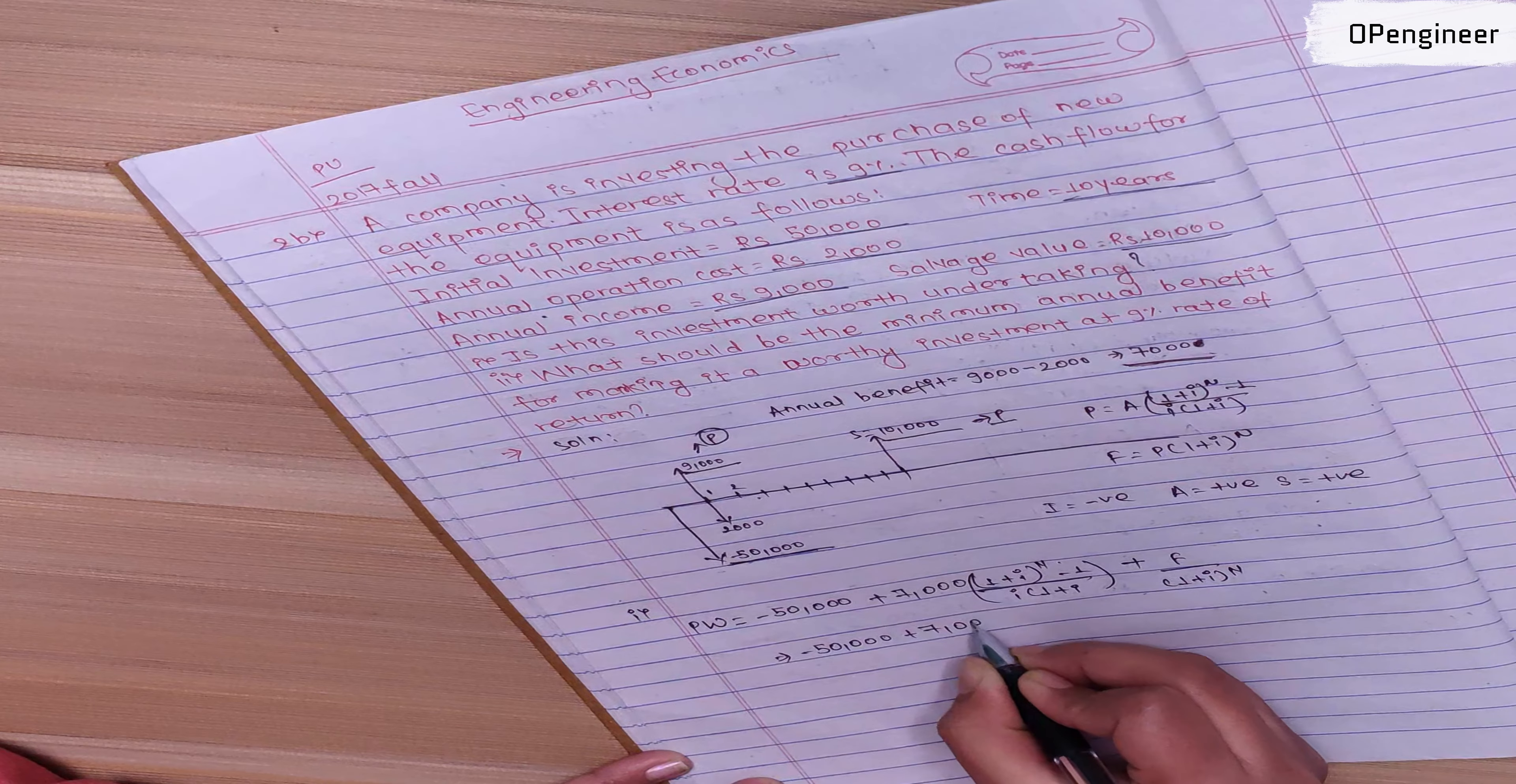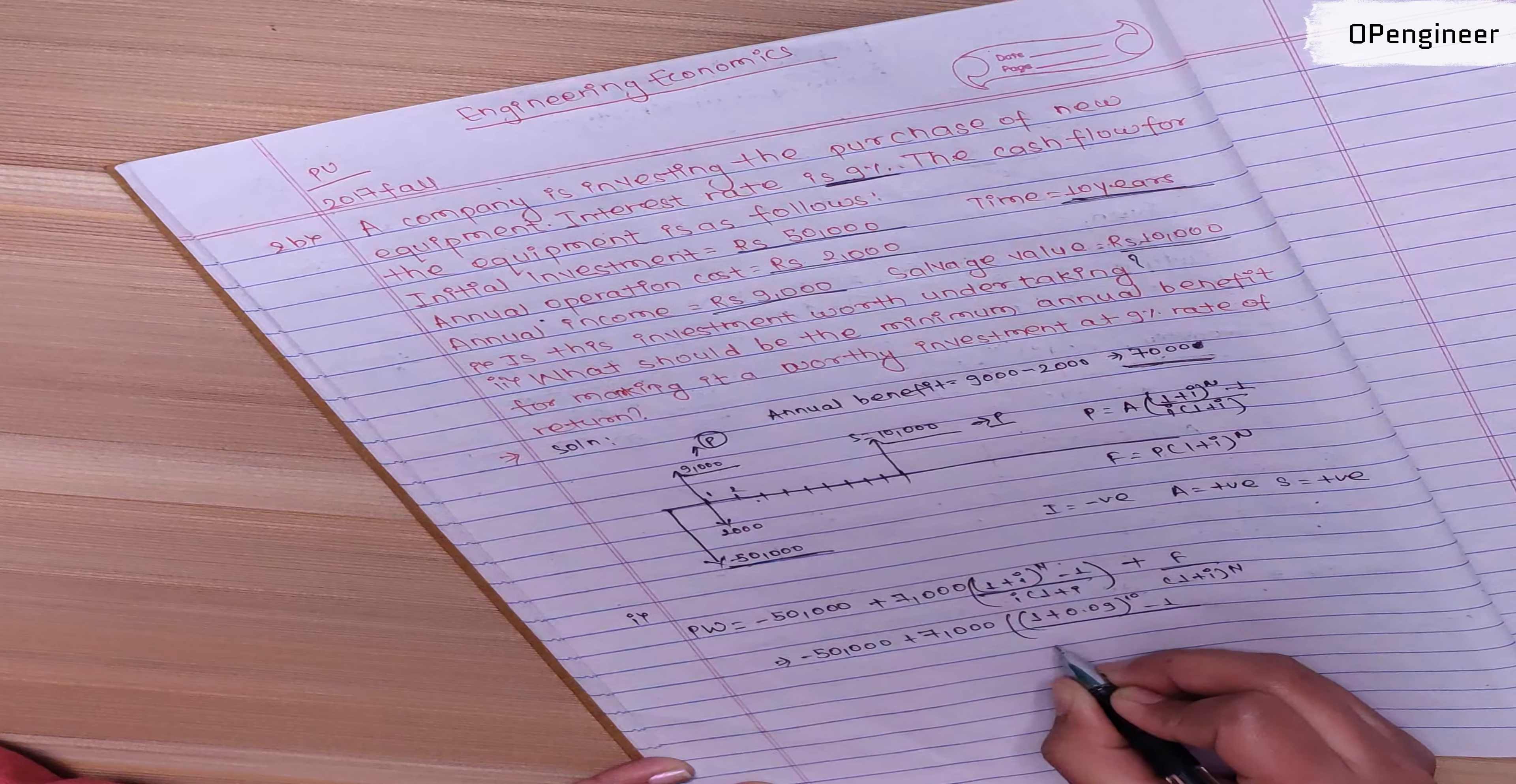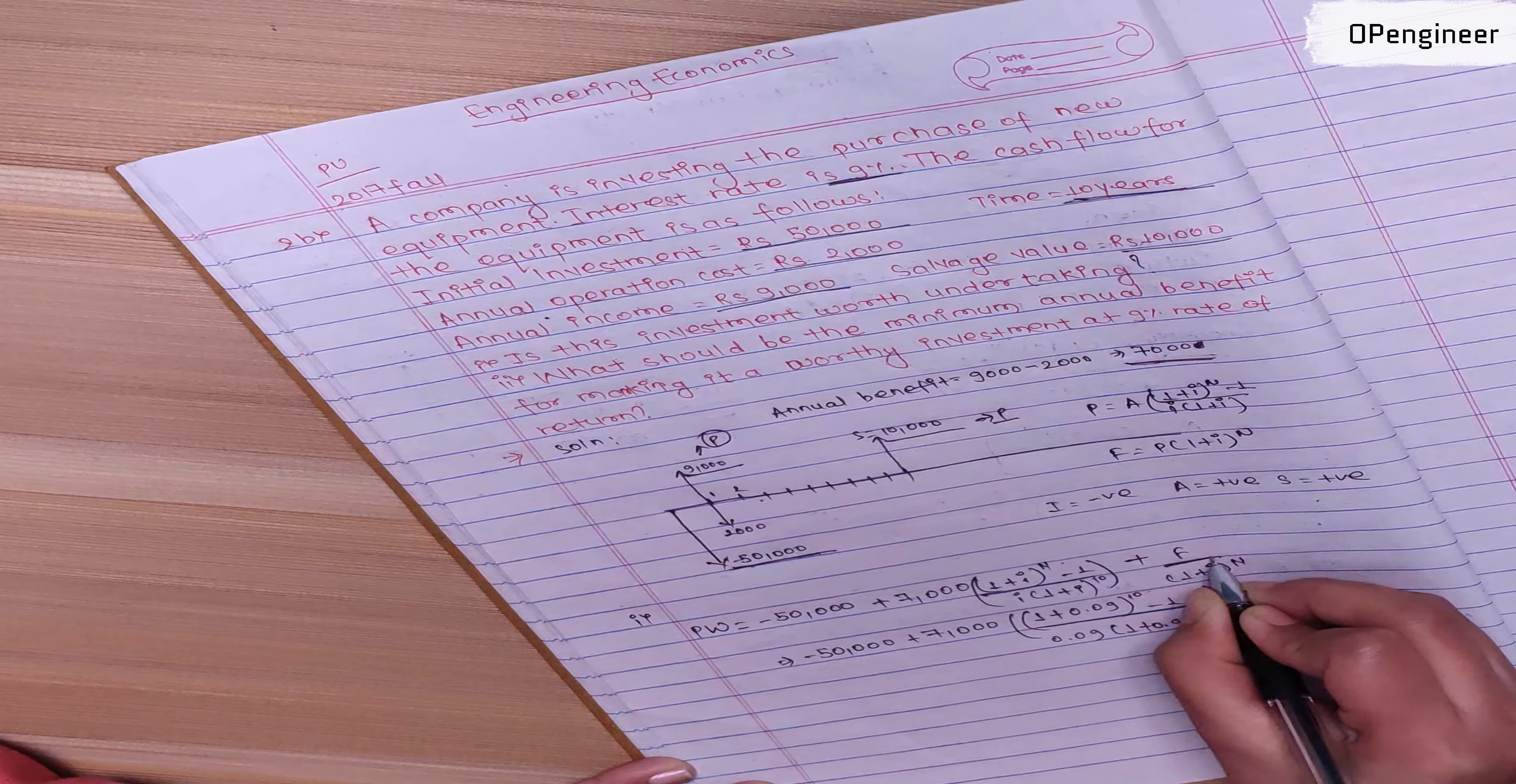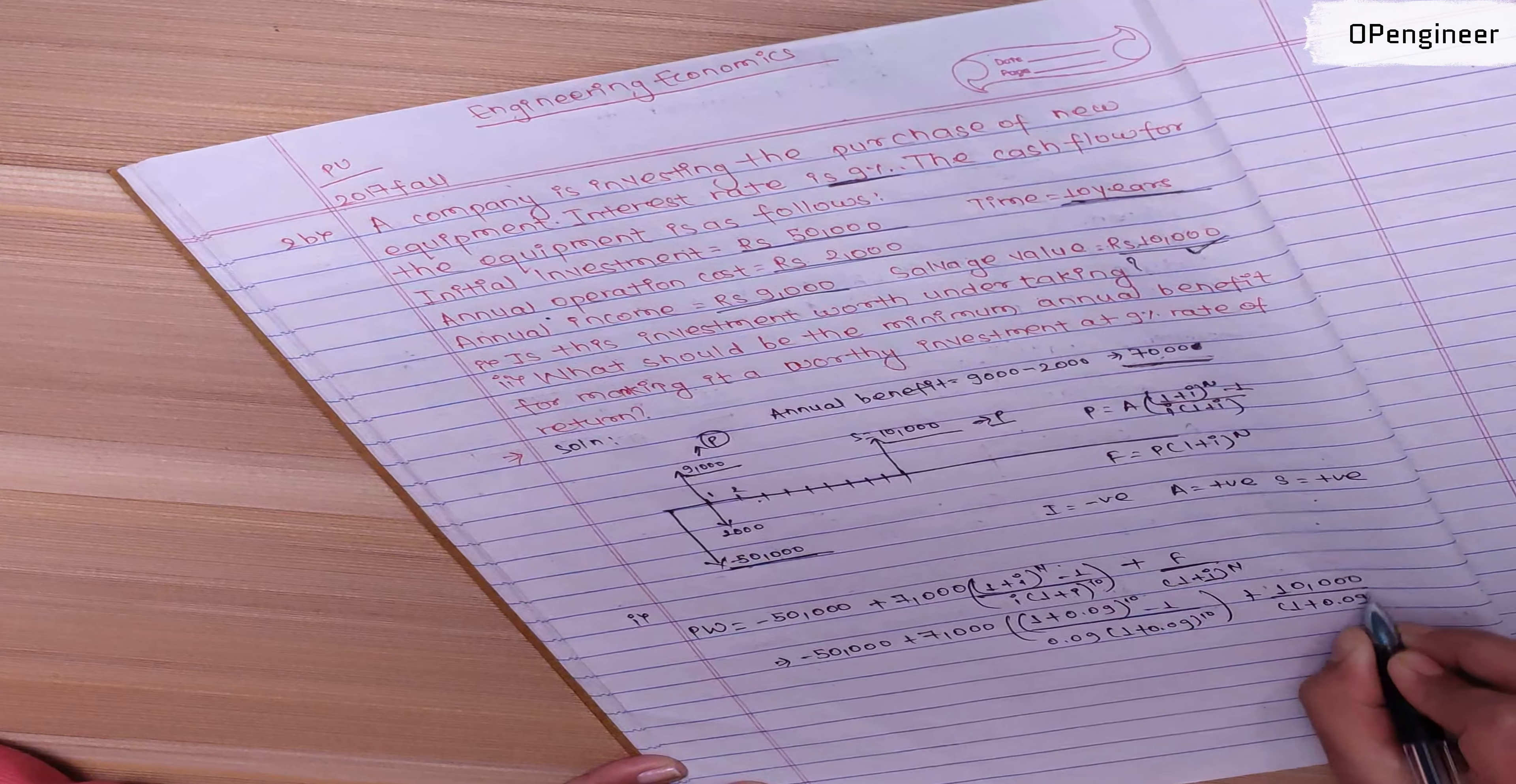So the present worth equals minus 50,000 plus 7,000 times (1 plus i) to power n minus 1 divided by i times (1 plus i) to power n, plus the salvage value 10,000 divided by (1 plus i) to power n.